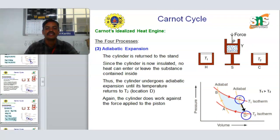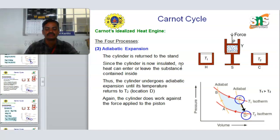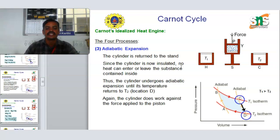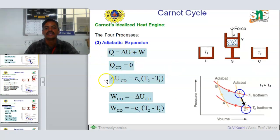The third process is adiabatic expansion. The cylinder is returned to the stand. Since the cylinder is insulated, no heat can enter or leave the substance. Thus the substance undergoes adiabatic expansion until its temperature returns to T2, at location D. The cylinder does work against the force applied to the piston. W_CD equals minus Cv times (T2 minus T1), and W_CD equals the change in internal energy ΔU_CD.